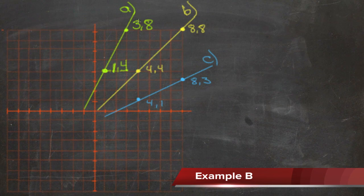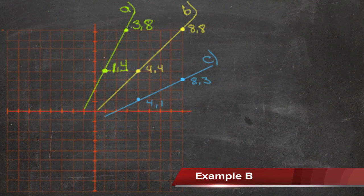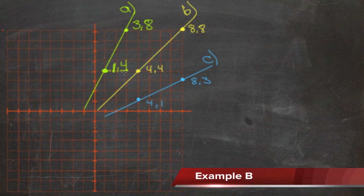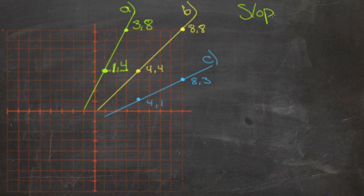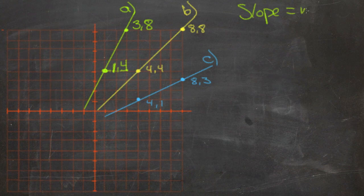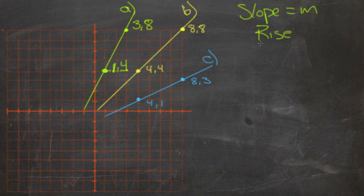So let's just take a look at these three examples here. Our first line, A, has two points, 3, 8, and 1, 4. What we need to do is find the slope. The slope is usually designated with the letter M. And it's defined as the rise over the run.